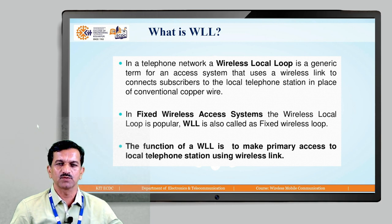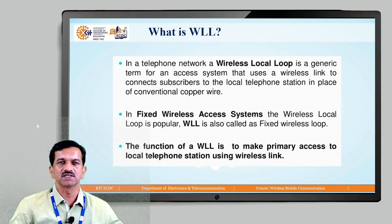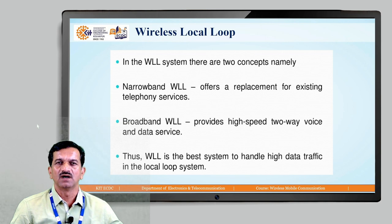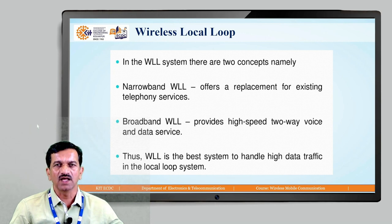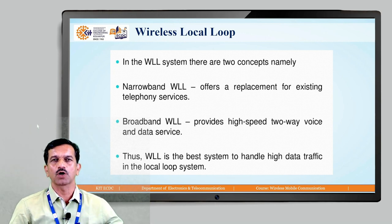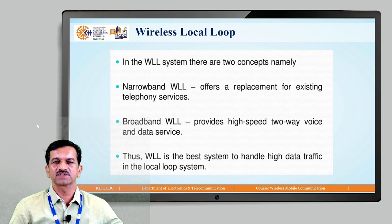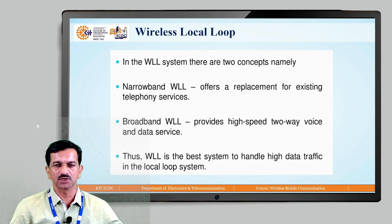The function of WLL is to provide primary access to the local telephone station using a wireless link. There are two types of wireless local loop systems: narrowband WLL and broadband WLL. Narrowband WLL offers a replacement for existing telephone services — narrowband means voice conversation transmitted from one point to another, with a bandwidth of only 3.4 kilohertz.